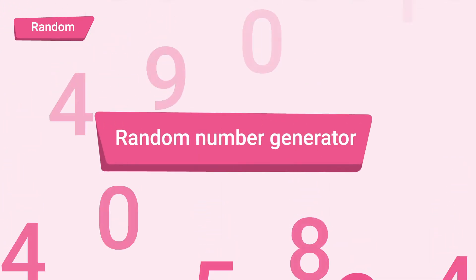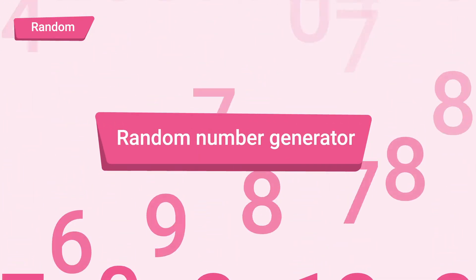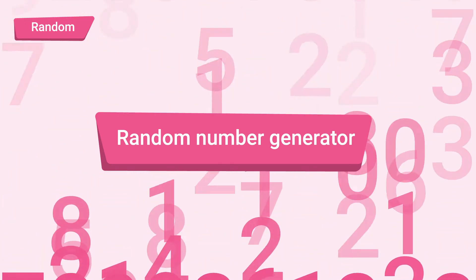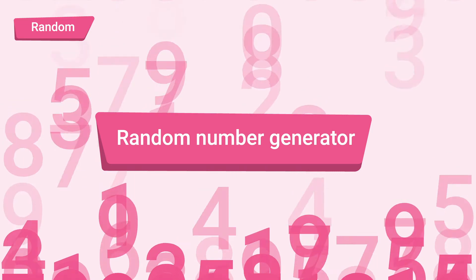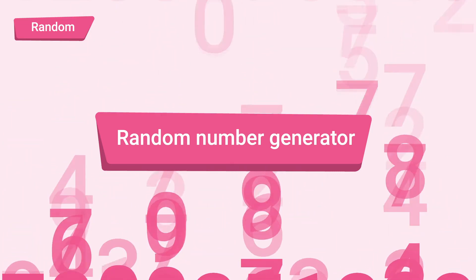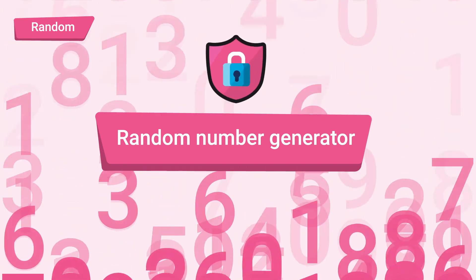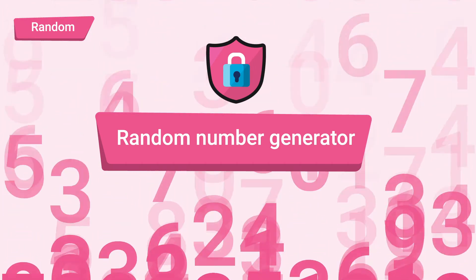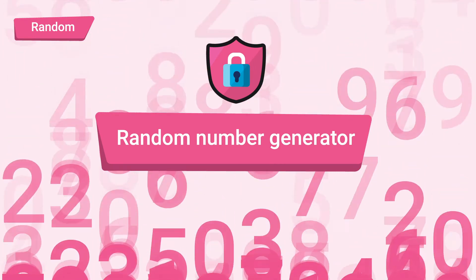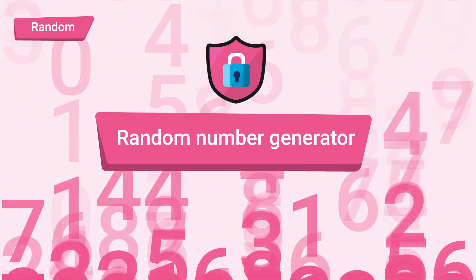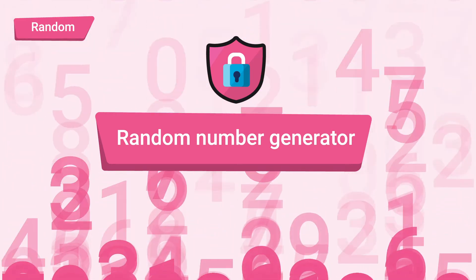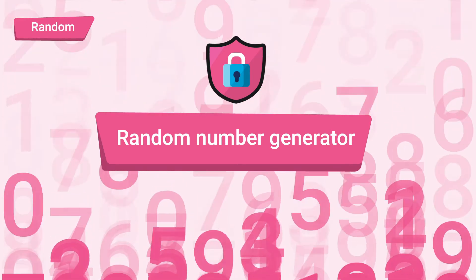This is a question that computer scientists have been trying to tackle for ages by creating random number generators. The quality of the random number generator is measured by its unpredictability. This is an important field of research because random number generators are used extensively to secure the internet by encrypting important data such as passwords and credit card information. From adding randomness to make fun games to securing data, random is widely used.